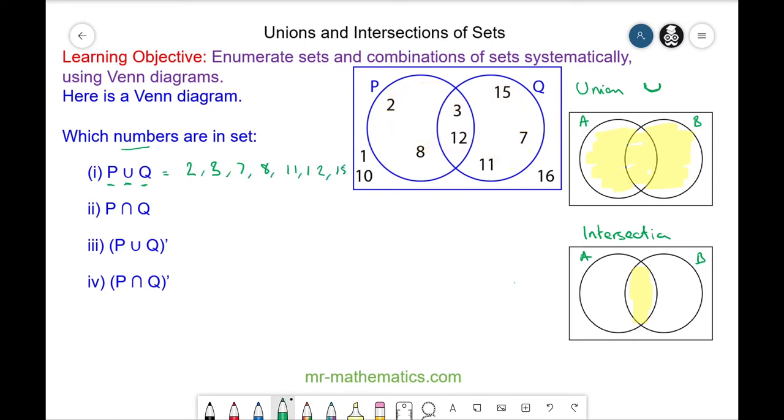The intersection of P and Q, well this is where the two sets overlap, and this identifies the elements 3 and 12.